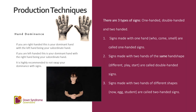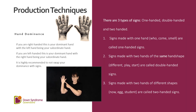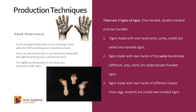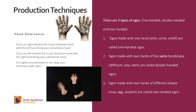Production Techniques. If you're right-handed, this is your dominant hand with your left hand being your subordinate hand. If you're left-handed, this is your dominant hand with your right hand being your subordinate hand. It's highly recommended not to swap your hand dominance with signing. Now there are three types of signs: one-handed, double-handed, and two-handed.